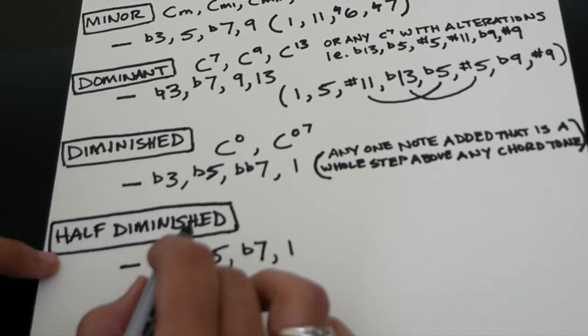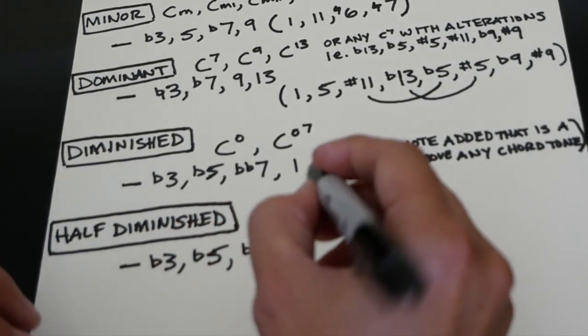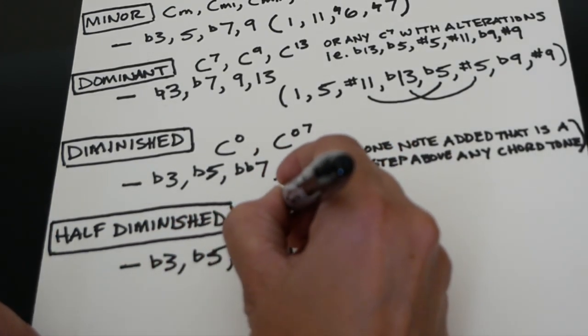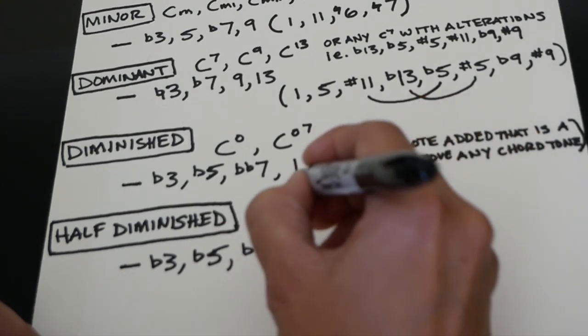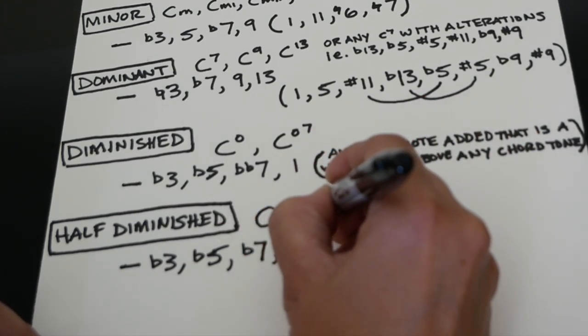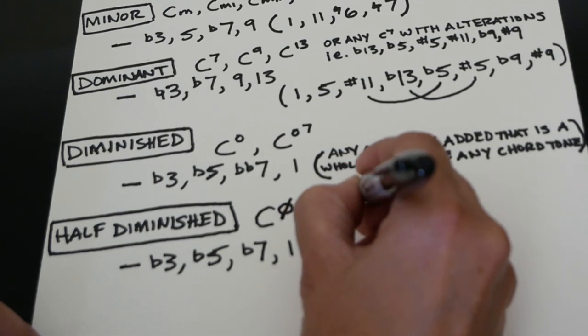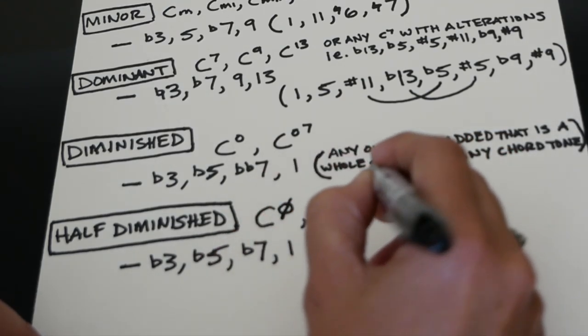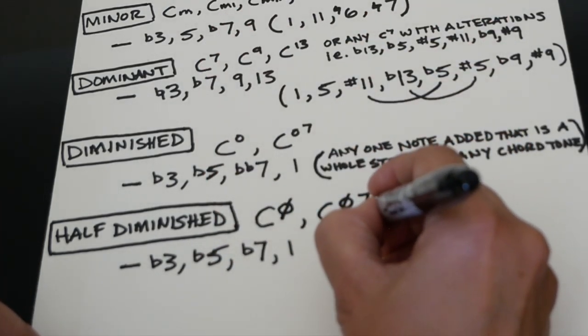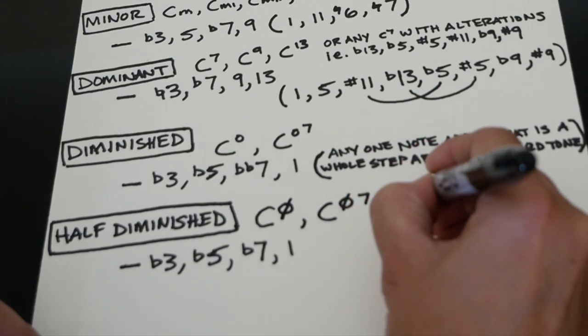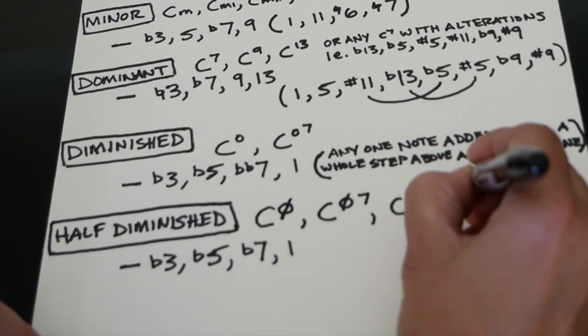I'm calling it half diminished today. There are really only a couple of ways to write these chords. This is how we write half diminished. Sometimes, although it's a little redundant, some people throw in the seven - they mean the same thing. Or you might see C minor seven flat five.